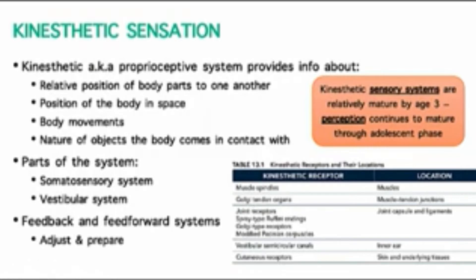We can also detect temperature changes via cutaneous receptors in the skin. Also included are nociceptors that sense pain. We can also use mechanoreceptors — Ruffini endings, Golgi-type receptors, modified Pacinian corpuscles. These are all mechanoreceptors located both in joint capsules and ligaments, but some are also located in the skin or deeper tissues of the skin, and they're able to sense pressure changes.